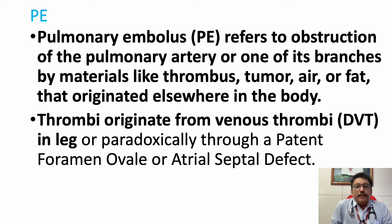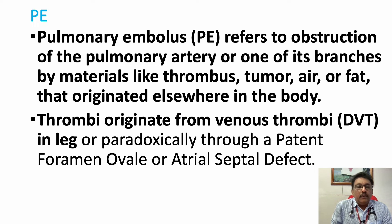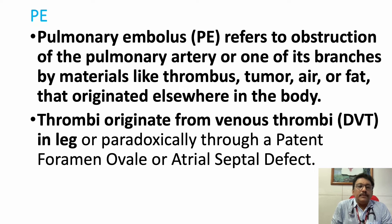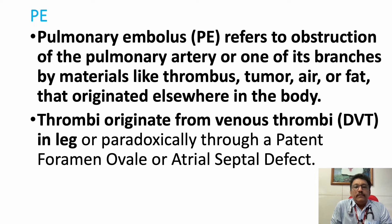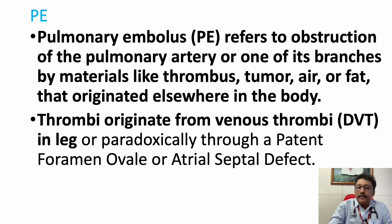Pulmonary embolism is an obstruction of the pulmonary artery or its branches. It can be due to thrombus or thromboembolism, tumor embolism, fat embolism especially after lower limb traumas. Thrombi can originate from the lower limb like deep vein thrombosis, rarely from the upper limb. Paradoxical embolism can also occur through the patent foramen ovale or atrial septal defect.